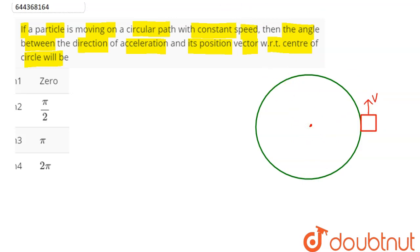Hence, the direction of the position vector with respect to the center of the circle will be the line joining the center to the point of the particle. This is our position vector.